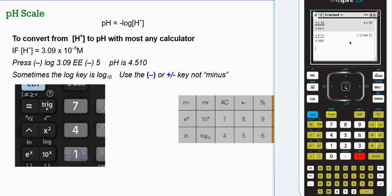Negative log 3.09 EE negative 5. Oops, nope, that's in the base. See, you've got to be careful on these TI calculators. You've got to tab over, get out of the base, and go into the main number here.